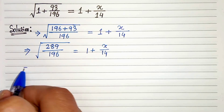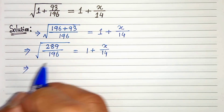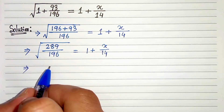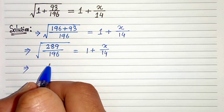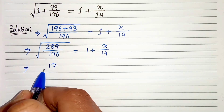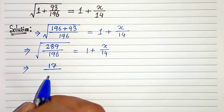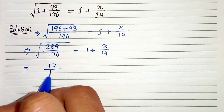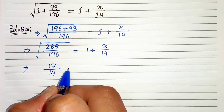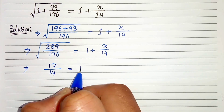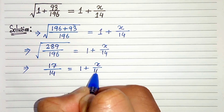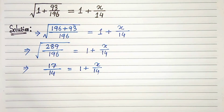Now we know that the square root of 289 is 17 and the square root of 196 is 14, which is equals to 1 plus x by 14.